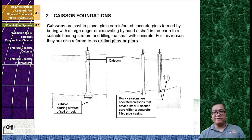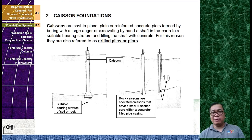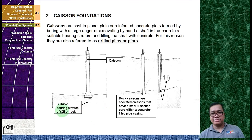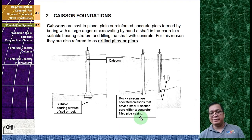Now let's move into caisson foundations. Caissons are cast-in-place, plain or reinforced concrete piers or columns formed by boring with a large auger or excavating by hand or machine to the load-bearing stratum, and filling the shaft with concrete. For this reason they are also referred to as drilled piles or piers. Rock caissons are socketed caissons with a steel H-section or a concrete-filled pipe casing driven into the bearing rock stratum.